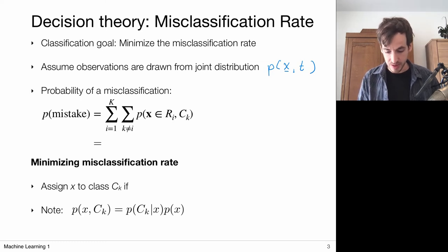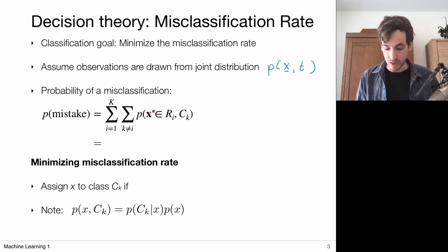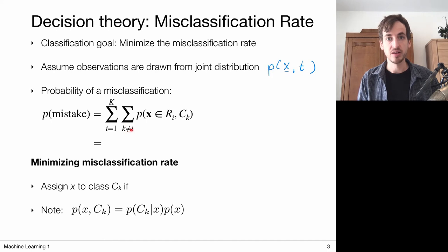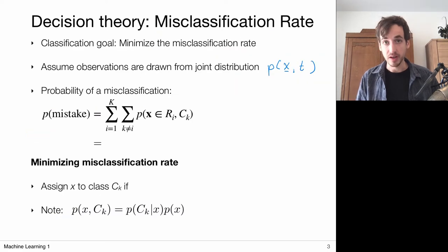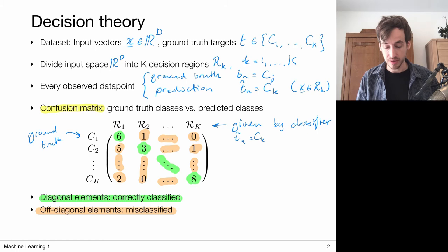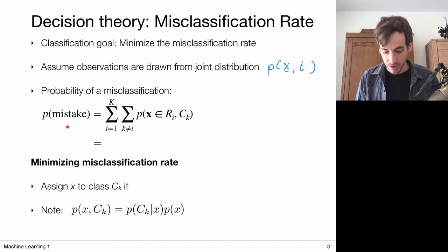The probability of making a mistake is given by summing over all my possible mistakes. We make a mistake whenever my data point falls in region i — so my classifier says it belongs to class i — but my ground-truth says it belongs to class k. I'm considering all cases where k is not equal to i, summing over all the different mistakes I can make. The type of mistakes are not just counted in a frequency setting, but I take the probabilities of making these mistakes from my joint probability distribution, giving an overall probability of making a mistake.